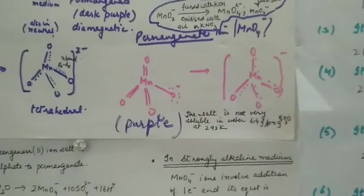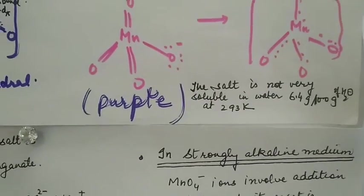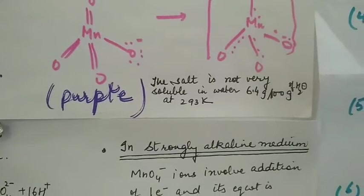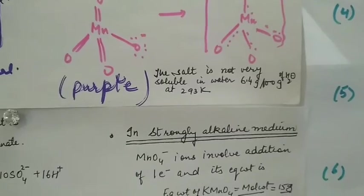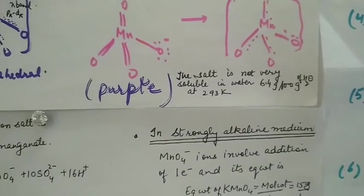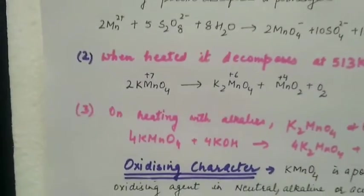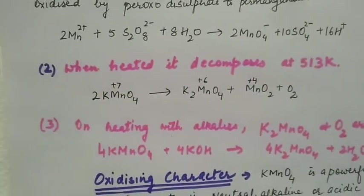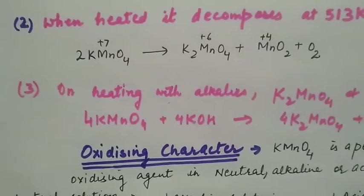Properties: First is solubility. The permanganate ion is not very soluble in water - about only 6.4 grams will dissolve in 100 grams of water at 293 kelvin. When heated, potassium permanganate will decompose into potassium manganate, manganese dioxide, and oxygen.